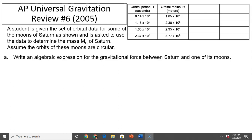A student is given a set of orbital data for some of the moons of Saturn, as shown, and is asked to use the data to determine the mass of Saturn. Assume the orbits of these moons are circular.